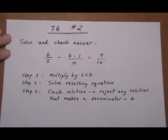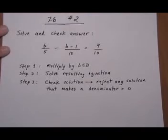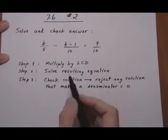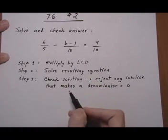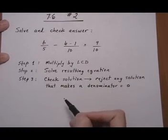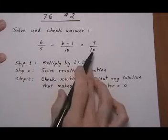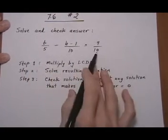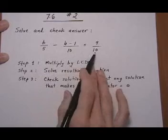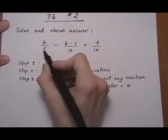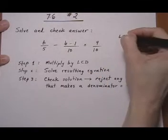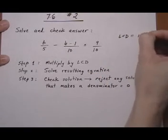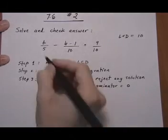All right, let's try out another one. 7.6, number 2. And we're going to use the exact same steps here. Multiply by the LCD. Solve the resulting equation. And then check the solution. And again, we have no variables in the denominator here. So we don't have to worry about a solution that's going to make a denominator go to 0. Because the denominators are constant terms, constant numbers. Okay, so LCD would be 10. So let's multiply both sides of our equation by 10.